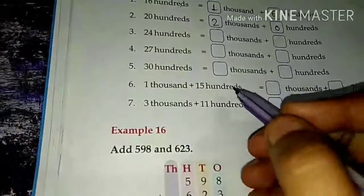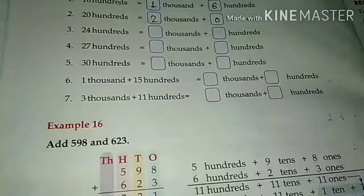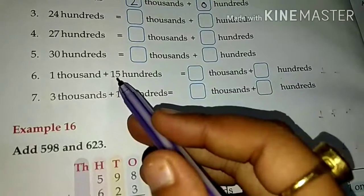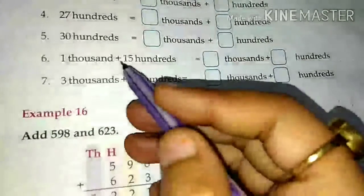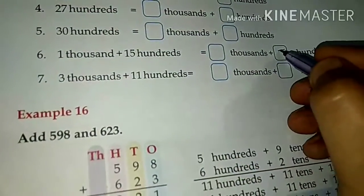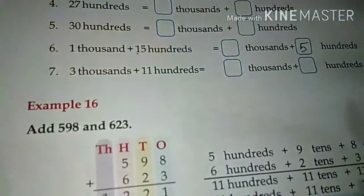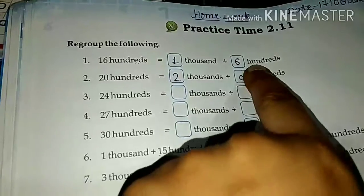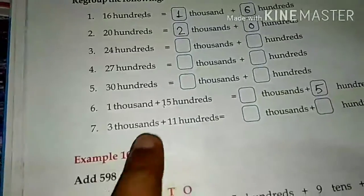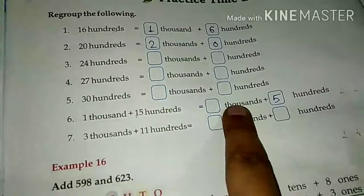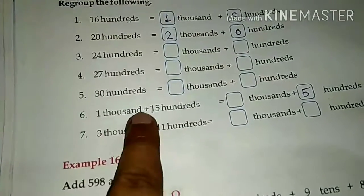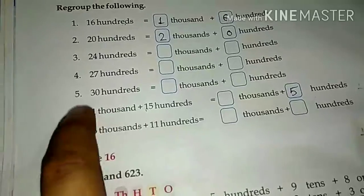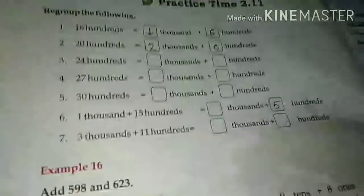Let's do question number six. First of all we have to solve the hundreds. Here we have two digits, so we have hundreds within hundreds. The first number is five — so here we solve the hundreds. This extra one is thousands. So we have one thousand and one thousand — how much will that be? That gives us two thousand.